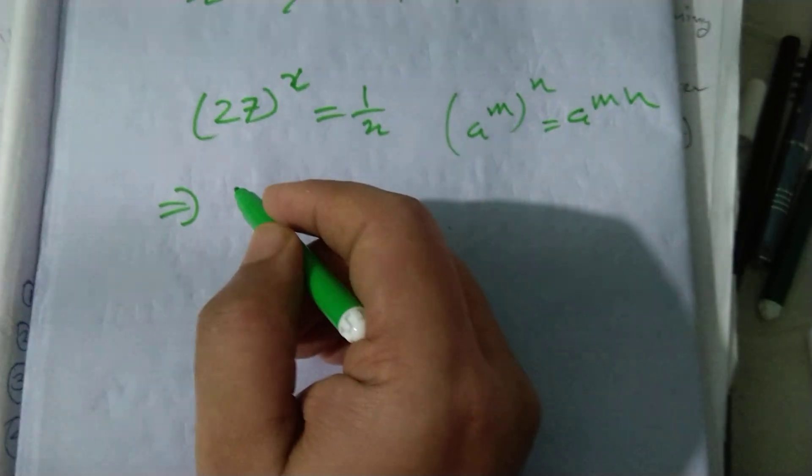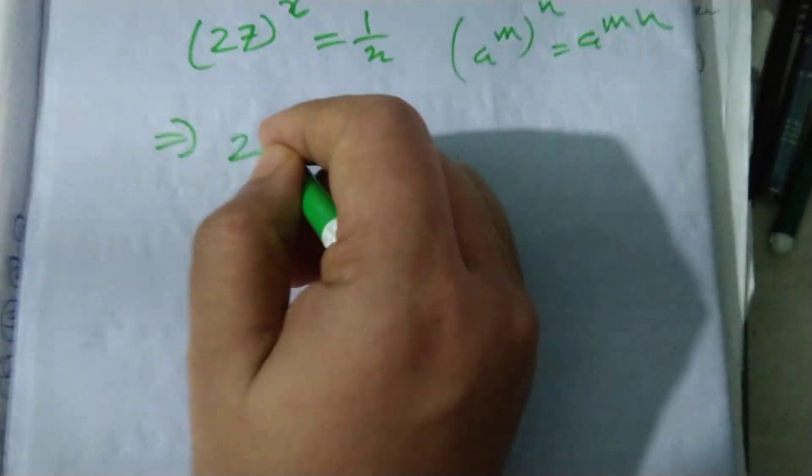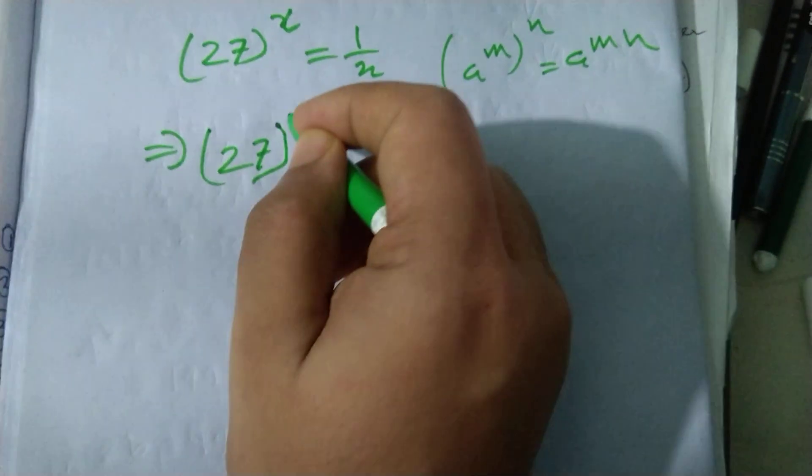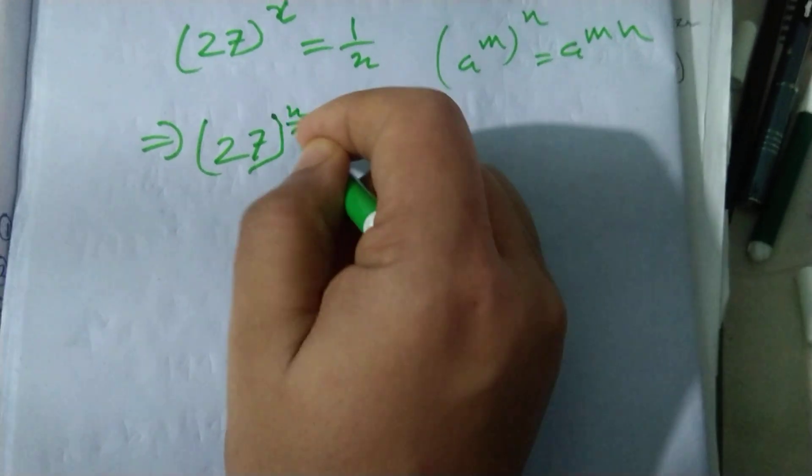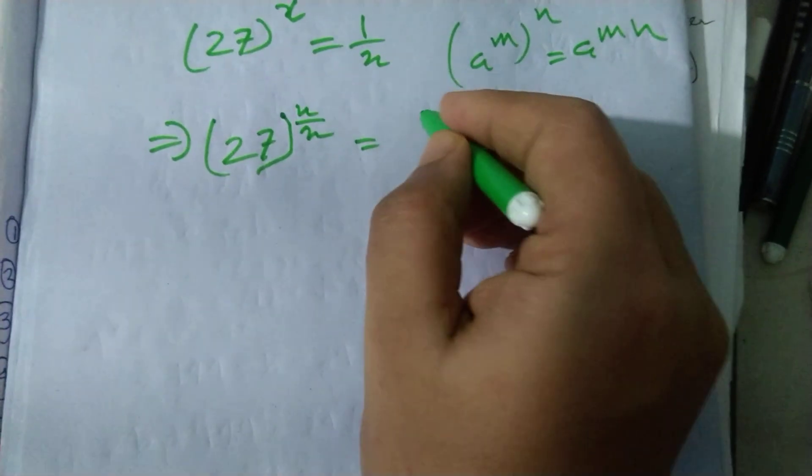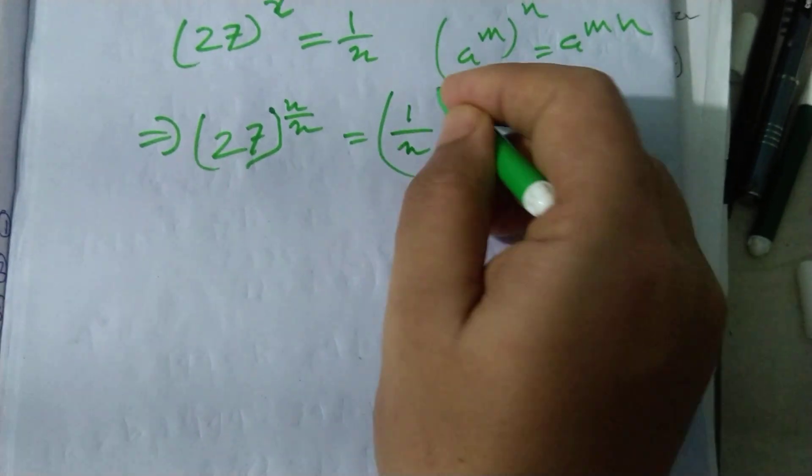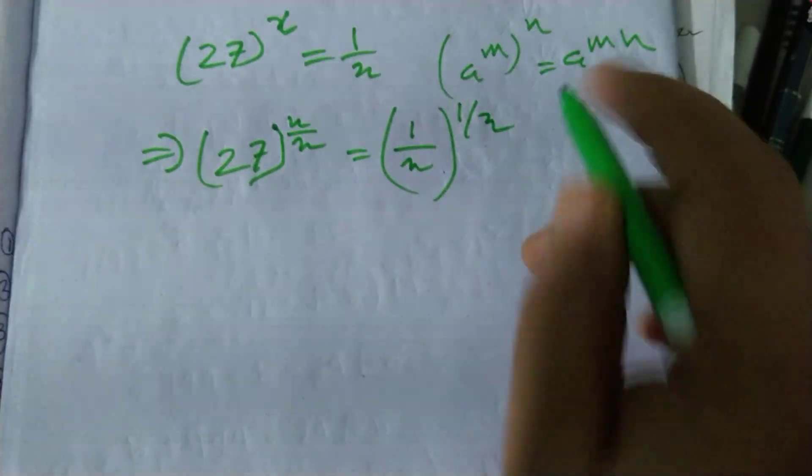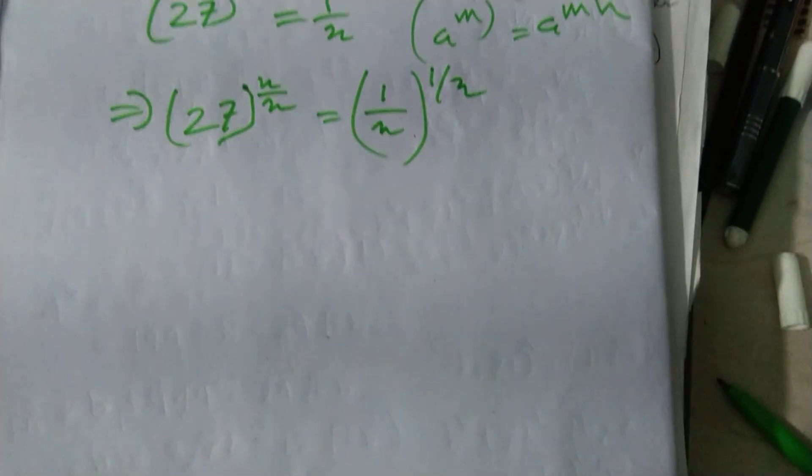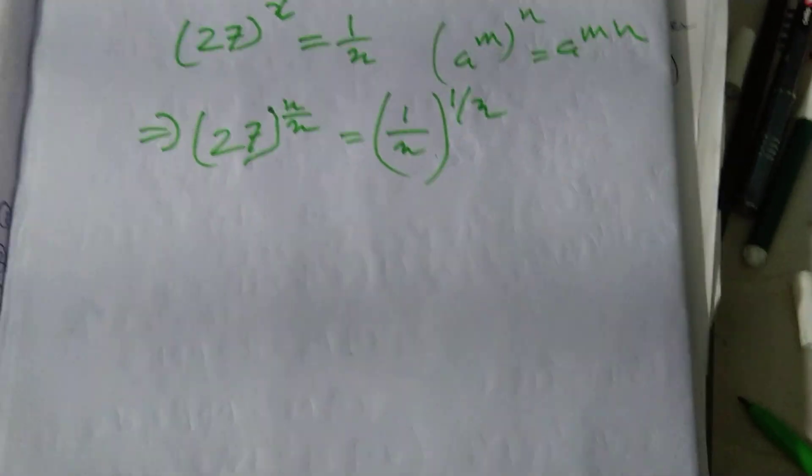Now, 27 to the power x by x is equal to 1 by x to the power x. That is 1 by x to the power 1 by x.